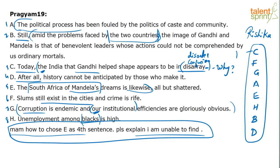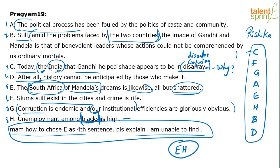If you notice, they're referring to two particular countries — one is India, one is South Africa. We need to pick sentences referring to India, and also sentences referring to South Africa, because it says 'the South Africa of Mandela's dreams is likewise all but shattered.' Just like India is in disarray, South Africa is also not in good shape. H has to relate to E — because 'blacks' is our clue word, referring to South Africans. So E-H can be a link. What else can be a link? 'Caste and community' — very predominant to India — 'politics of caste and community.'